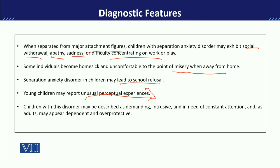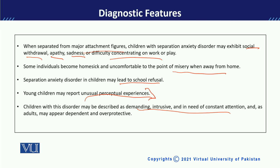इसी तरह ये कहा जाता है कि ये बच्चे आम तौर पर demanding होते हैं और बहुत ज़्यादा intuitive होते हैं। इनको मुसलसल ये होता है कि adults इन्हीं की तरफ attention pay करते रहें — इसी वजह से इनका clinging behavior होता है। इनकी dependency अपने parents पر बहुत ज़्यादा होती है, ये चाहते हैं कि parents इन्हें over-protect करें, और almost हर काम के लिए they are looking towards their parent, because they actually can't handle their anxiety to get themselves away from them। तو इन बच्चों की demand — उनके साथ रहने की, attention लेने की — as compared to other children ज़्यादा होती है।